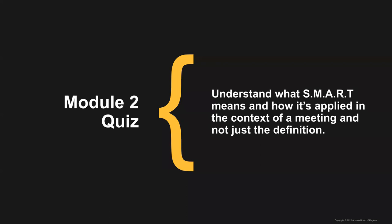In the module two quiz, you need to understand what SMART means, but most importantly how it's applied in the context of a meeting — not just memorizing the definition. I'm going to give you an example of an objective and you're going to tell me whether or not it meets the SMART criteria or which of the five elements it meets.